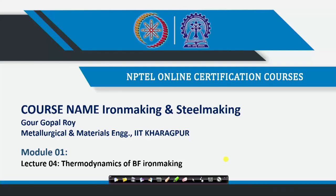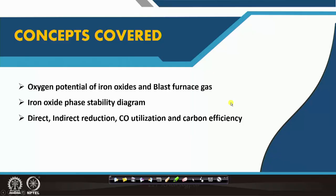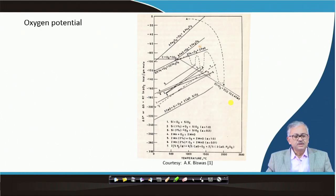In this lecture, we will discuss the thermodynamics of blast furnace iron making. It is a little more elaborate compared to the basic thermodynamics covered during iron making and steel making in the first lecture. The concepts covered here will be the oxygen potential of iron oxide and blast furnace gases, their correlation, the iron oxide phase stability diagram, direct and indirect reduction, CO utilization, and carbon efficiency.